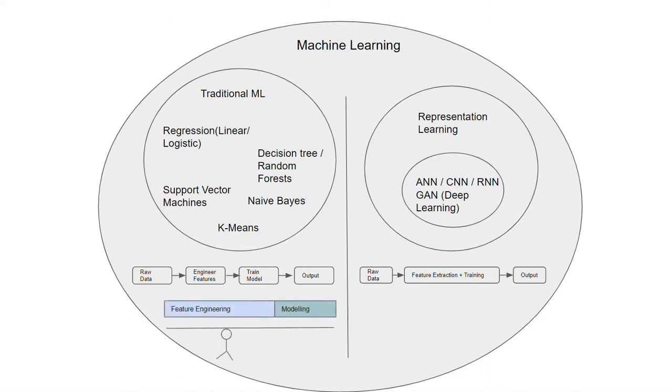Hence, in traditional machine learning, the data scientists have to spend more time in feature engineering and lesser time in modeling the data. Whilst in deep learning, lesser time is spent in feature engineering phase, while more time is spent in fine tuning the model architecture to achieve the desired accuracy.